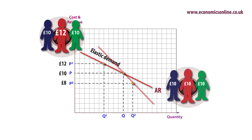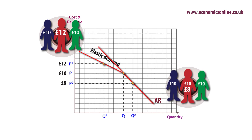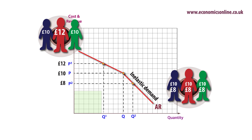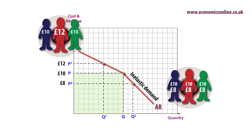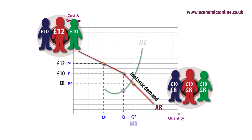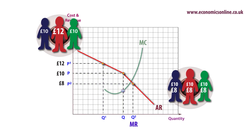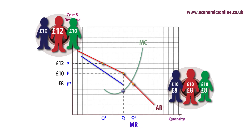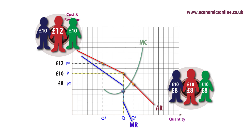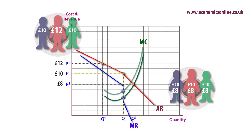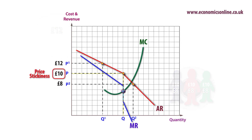Reducing price may lead to retaliation, as rivals are forced to drop their price to maintain their market share. In this case demand is relatively price inelastic. Revenue is maximized at price P. Profits are maximized when marginal cost equals marginal revenue, also at price P. Since marginal revenue falls at twice the rate of average revenue, the marginal revenue curve is split. Any change in costs does not alter the oligopolist's profit-maximizing position, so price tends to stick at one price.